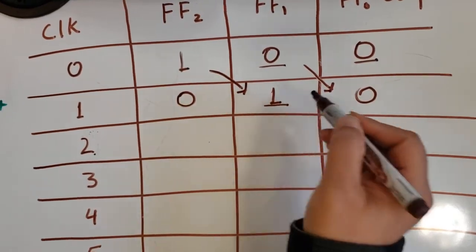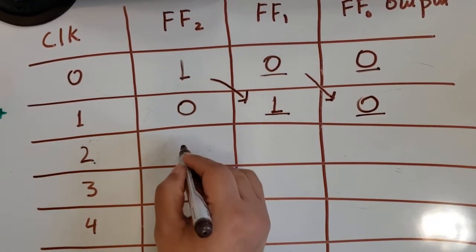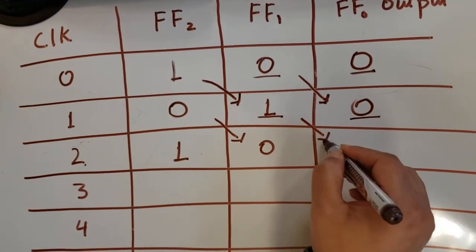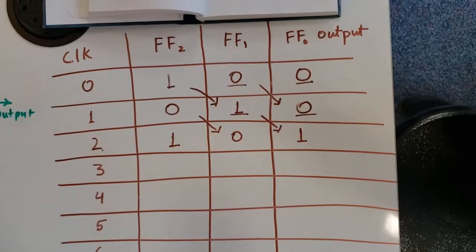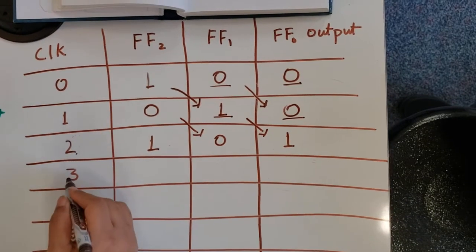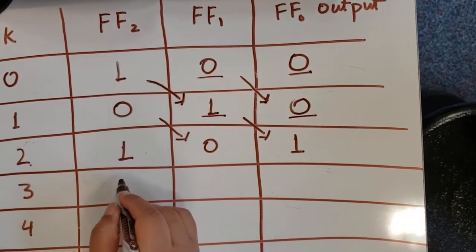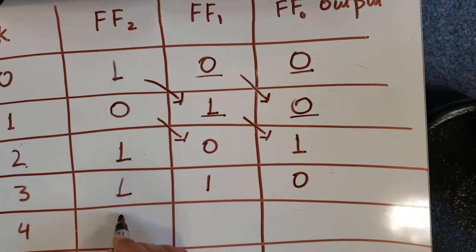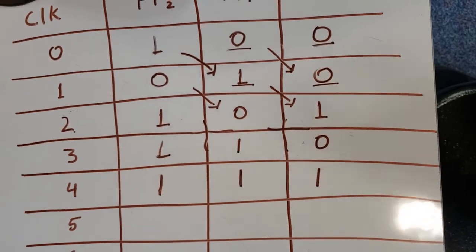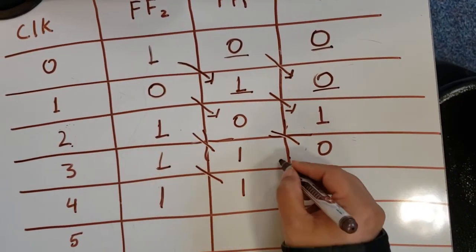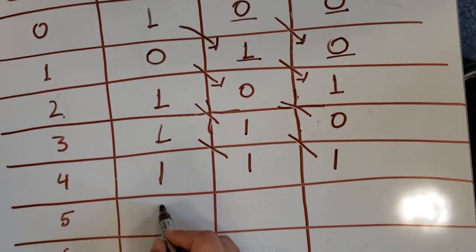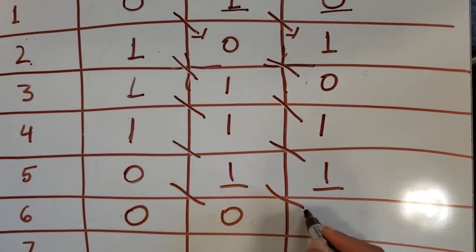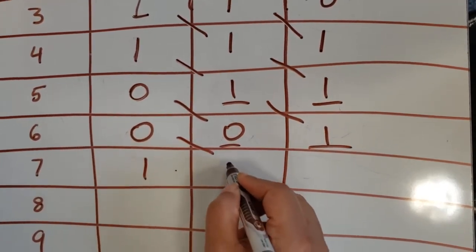For clock cycle 2, XOR of FF1 and FF0 gives 1, and the values shift accordingly. For clock cycle 3, XOR of FF1 and FF0 gives 1, producing values 1 and 0 as we shift. We continue computing: XOR of 1 and 1 is 0, shifting those values. Then XOR gives 0 again, shifting. Then XOR gives 1, shifting those values.